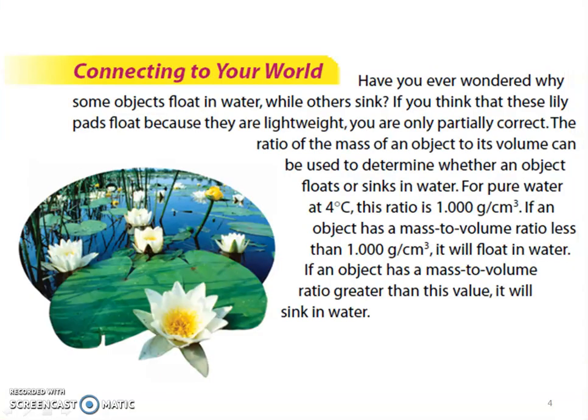Have you ever wondered why some objects float in water while others sink? If you think lily pads float because they are lightweight, you are only partially correct. The ratio of the mass of an object to its volume can be used to determine whether an object floats or sinks in water. For pure water at 4 degrees Celsius, this ratio is 1 gram per cubic centimeter or milliliter. Density is a ratio between mass and volume of that object, and it's going to be good to know later that density of water is 1.